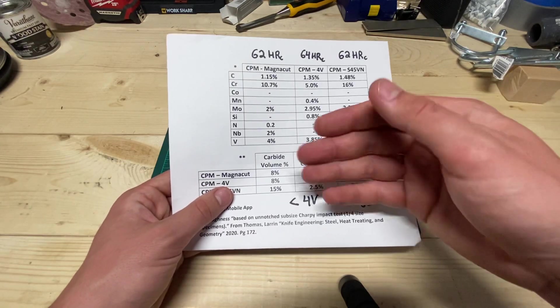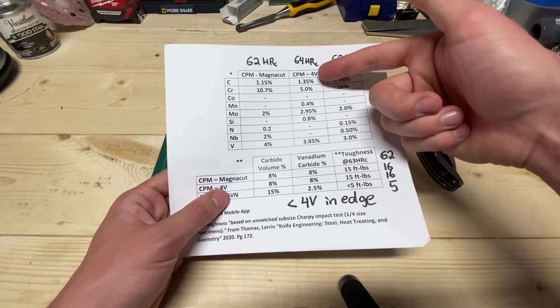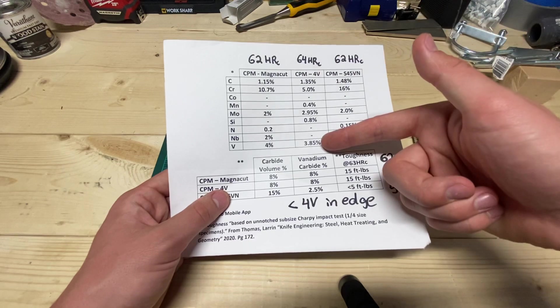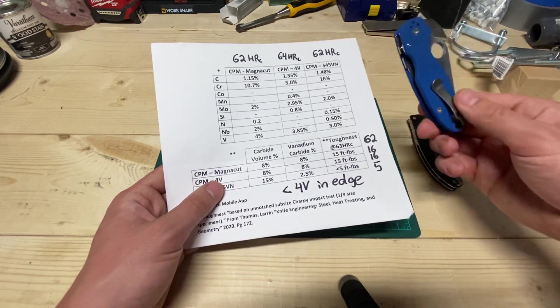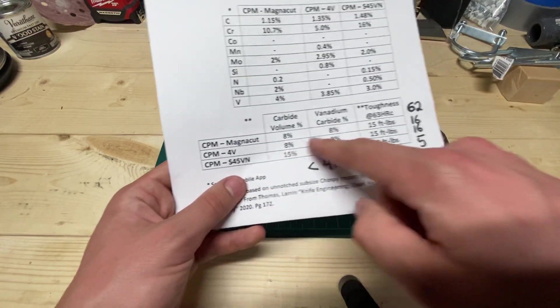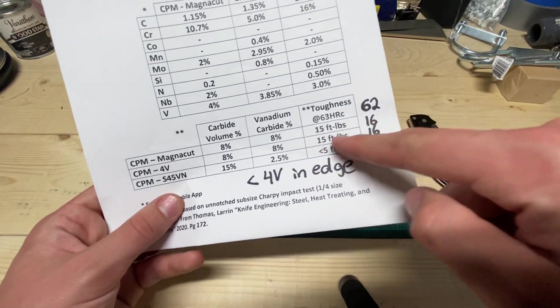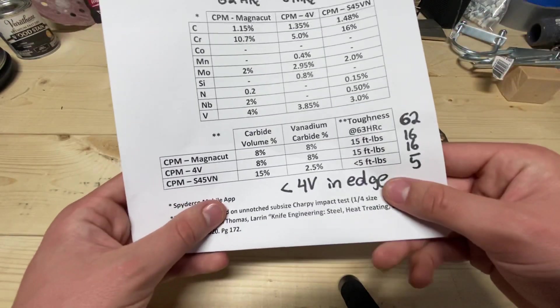And what you get now is a steel that has the same edge retention as 4V, the same stainlessness as 20CV, while also having, do you see that down there, the same toughness as 4V.